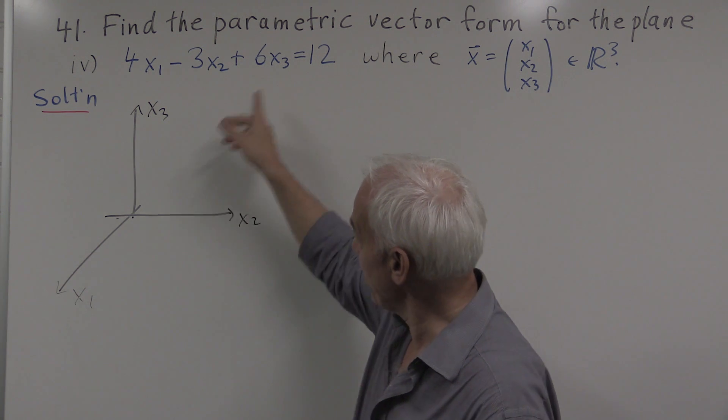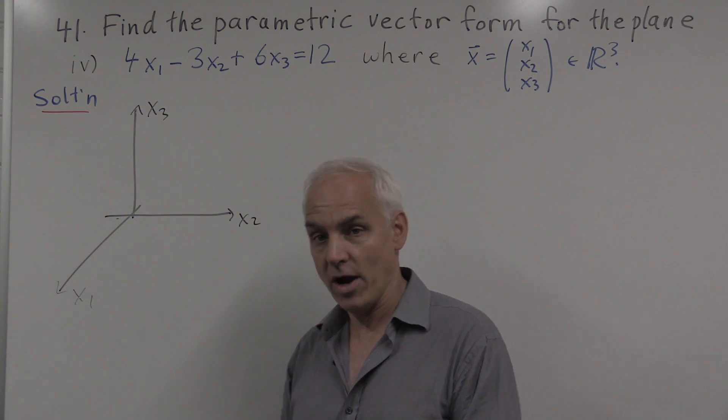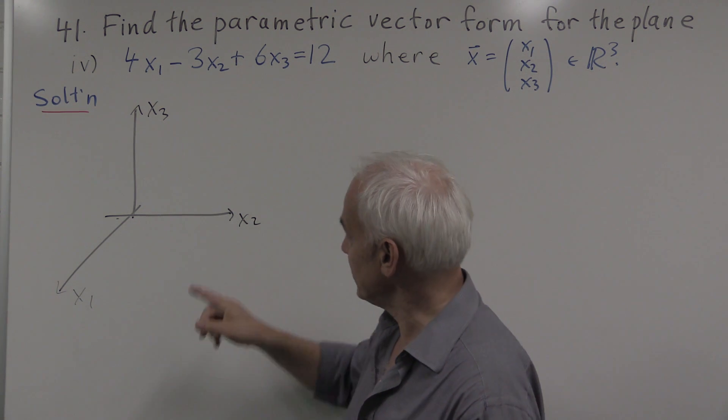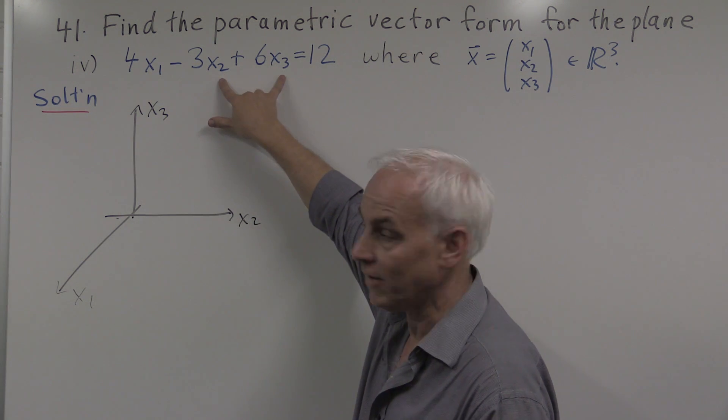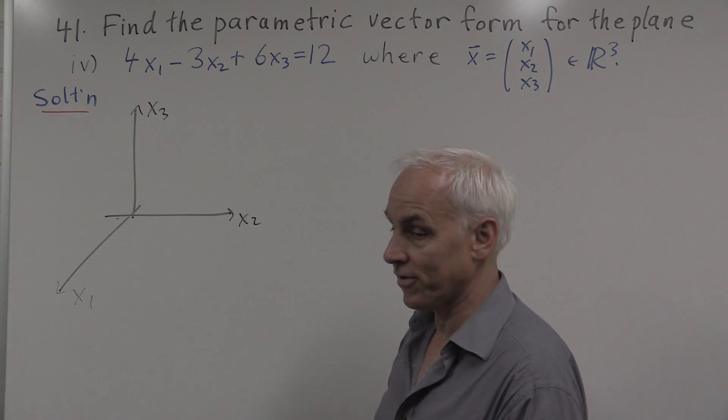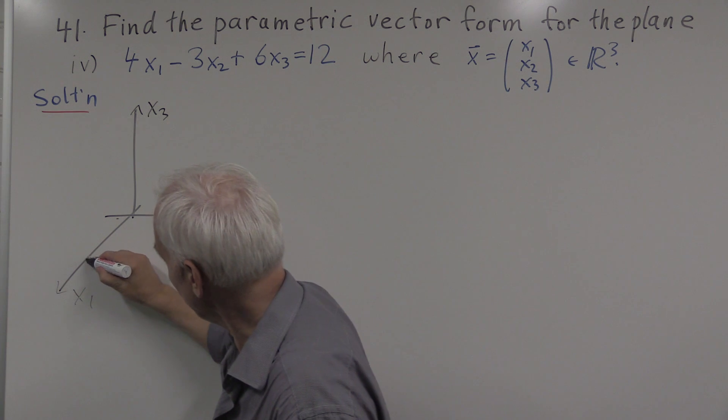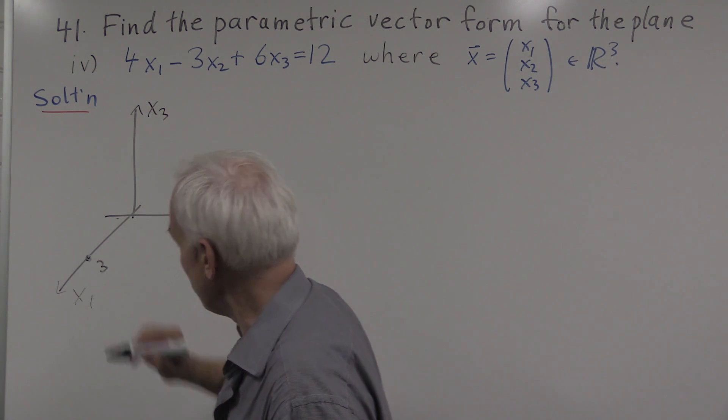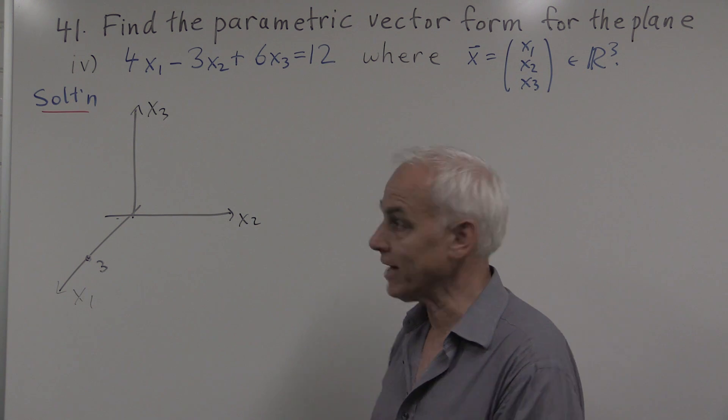So similarly, if we want to know where this plane meets the x1 axis, we could set x2 and x3 equal to zero. If we do that, then x1 is equal to three. So if this is three here, then we know that the plane is going through that point on the x1 axis.